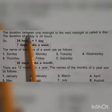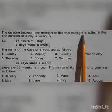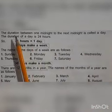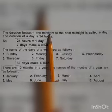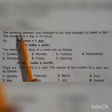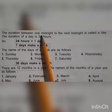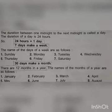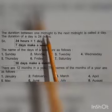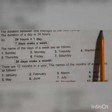The duration between one midnight to the next midnight is called a day. Midnight means the deep night at 12 o'clock. Duration means the time — the time between today's midnight to tomorrow's midnight. Like this, the full period is called a day.